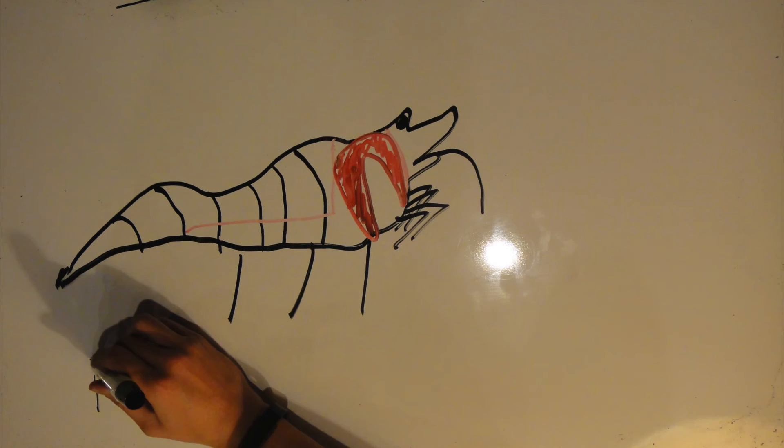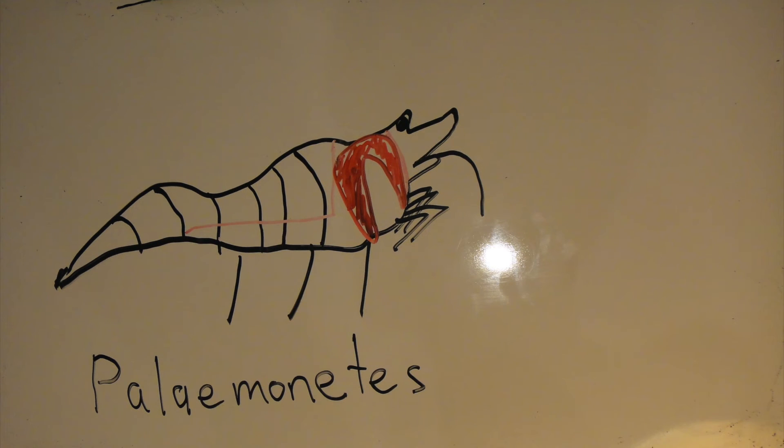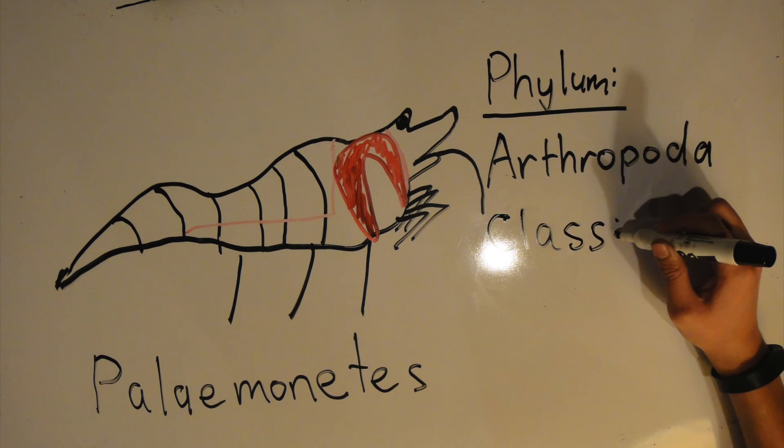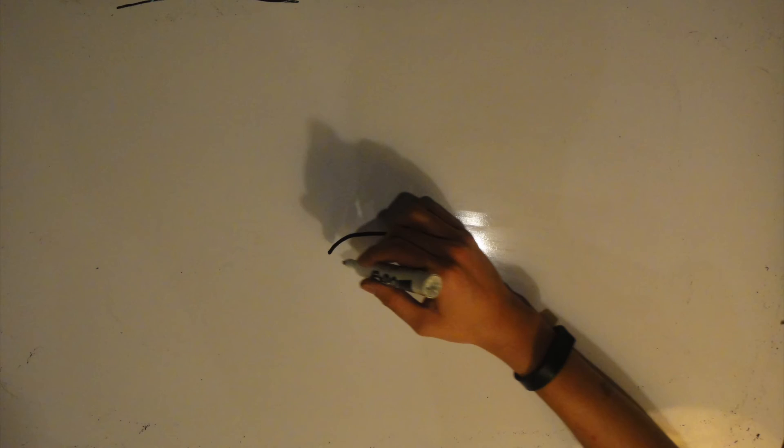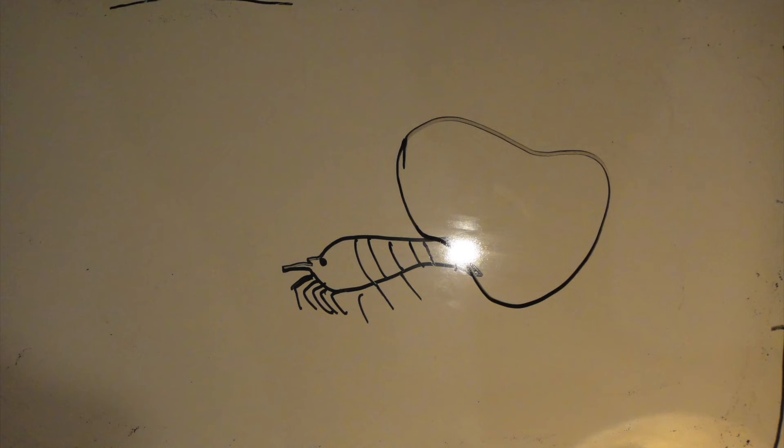Yep, you guessed it. It is the glass shrimp, otherwise known as Palaemonetes. Palaemonetes are part of the phylum Arthropoda and the class Malacostraca. They can generally be found hiding under tiny rocks or vegetation for protection. Since glass shrimp eat primarily brown algae and other phototrophic organisms, they can be classified as the primary consumer.